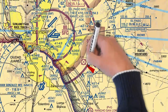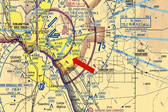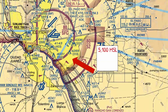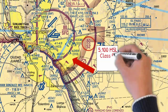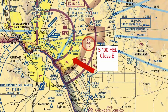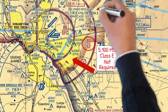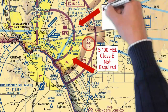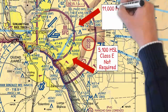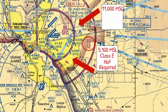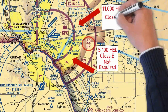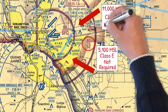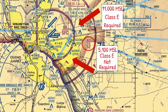Now let's zoom on over to El Paso, Texas. If you're flying right here at 5,100 feet MSL, which class of airspace are you in? Correct — Class E, because you're below the Class C shelf. Is ADS-B required? No. How about if you're right here at 11,000 feet MSL, above the top of Class C airspace? Which airspace are you in? Correct — Class E airspace. Is ADS-B required? Yes, you are above 10,000 feet and also above 2,500 feet AGL.